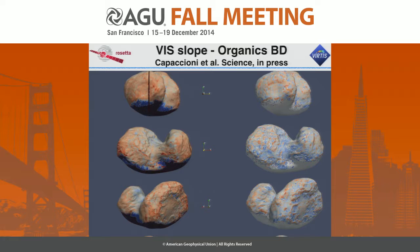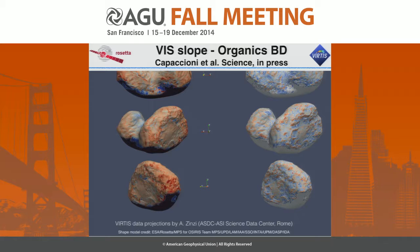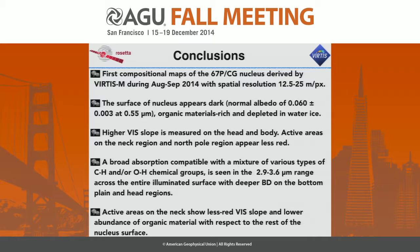This is the same map seen from different viewing geometries, confirming the correlation between lower organics values and color in the neck region. In conclusion, VIRTIS has obtained the first compositional map of the 67P/CG nucleus during August–September, when activity was particularly low. This map can be considered the starting point to understand the composition and its variability through the perihelion passage.